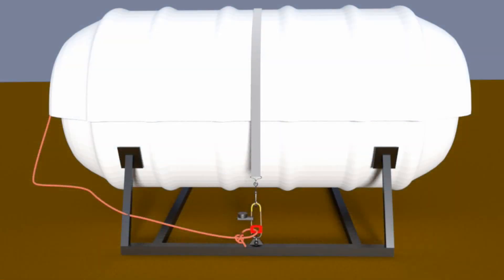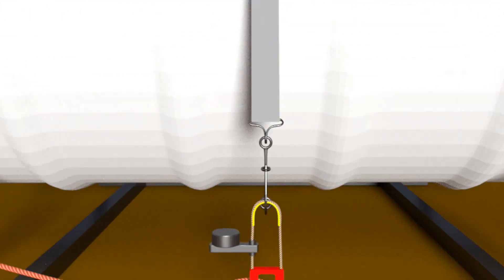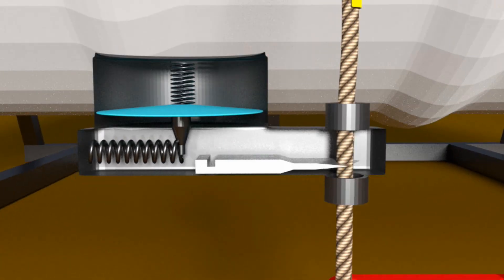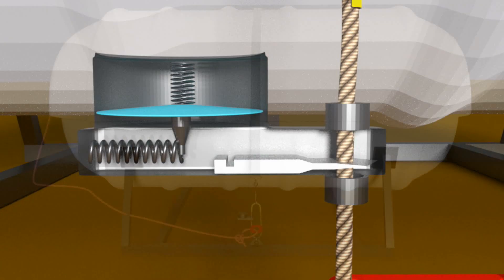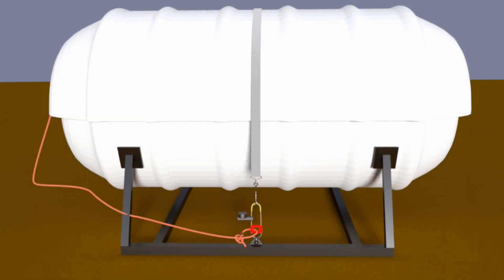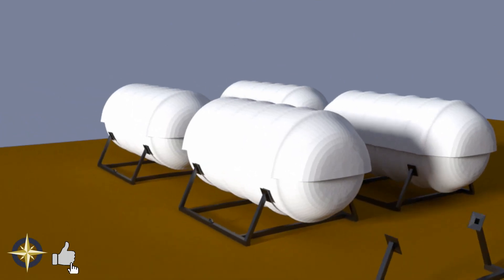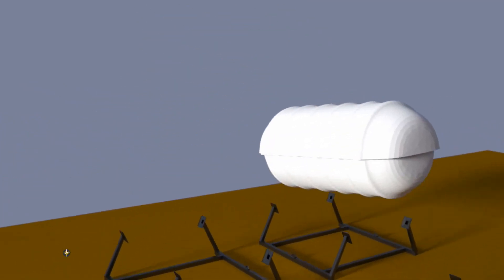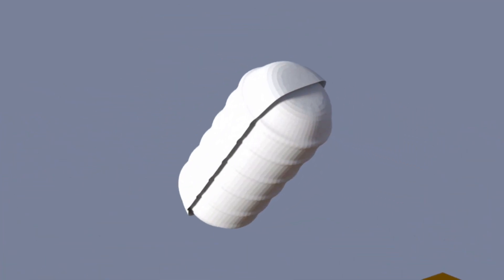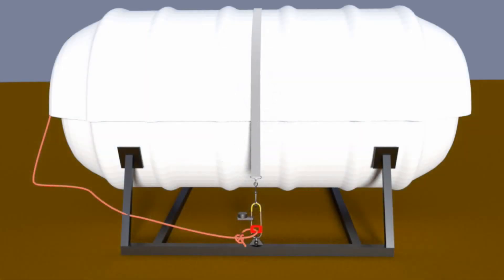Hydrostatic release units are your solution. They automatically cut your life raft free and trigger its inflation in the event that you're unable to launch it yourself. Even if you've already successfully abandoned ship into another raft, the remaining release units will release all your remaining life rafts, dramatically increasing your resources available for survival.